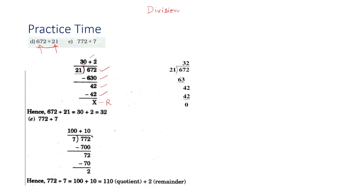Why have I written 2 here and not 3? Because if you write 3, it will be 63, and 63 is more than 42. So I have written 2. Your quotient is 30 plus 2, which equals 32. This is one way you can solve this division problem. I have also solved the same problem by the long division method over here.